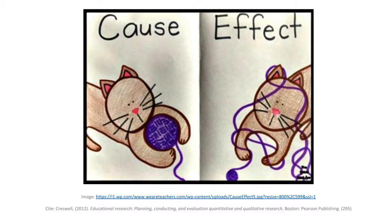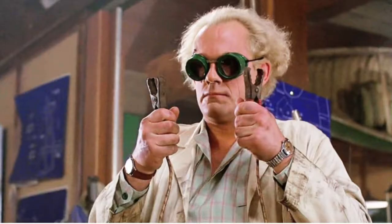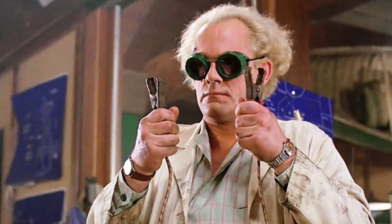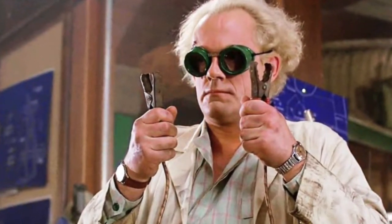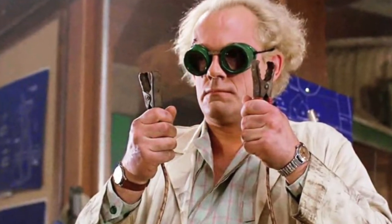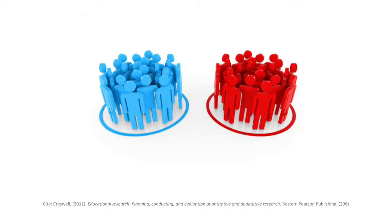Experiments are the best of the quantitative designs to use to establish probable cause and effect. Experimental formal research began in the late 19th century and early 20th century, and in 1903, Shiler introduced the use of control groups.